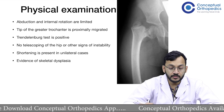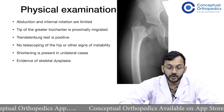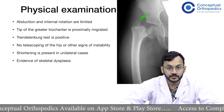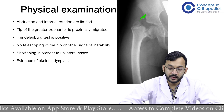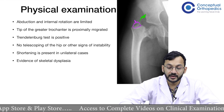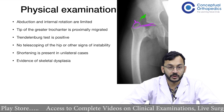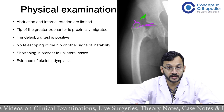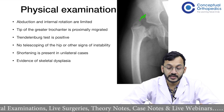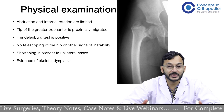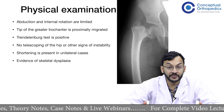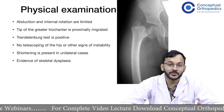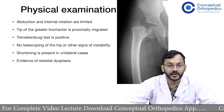As shown here, abduction is limited because the available arc is very small. The tip of the greater trochanter is at a higher level compared to the femoral neck, which is why the Trendelenburg test is positive. There is no telescopy because the femoral head remains within the acetabulum, providing a stable joint. Shortening is present only in unilateral cases since the contralateral hip is normal.